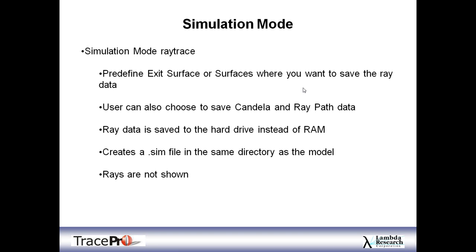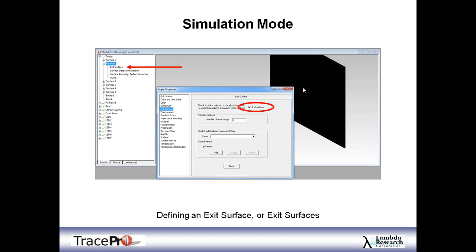Simulation mode creates a .sim file in the same directory as your model. Be aware that these sim files can get very large when tracing a large number of rays. If your computer does automatic backup and you have data limits, keep an eye on your sim files, because it's easy to exceed those limits if you have many sim files in a backed-up directory. Also note that rays are not shown in the model window when running a simulation mode ray trace.